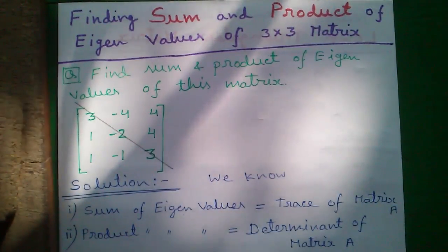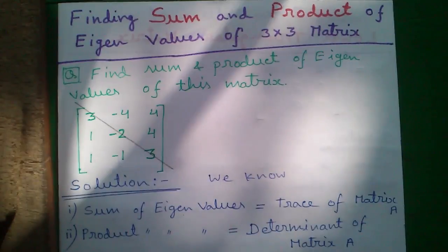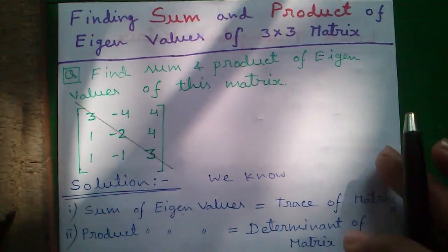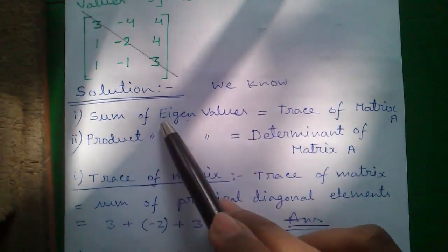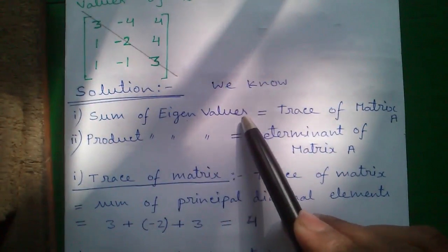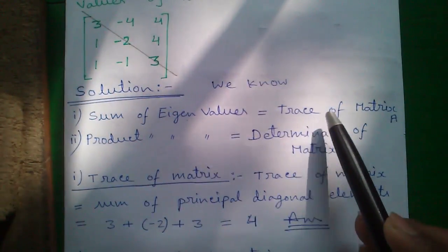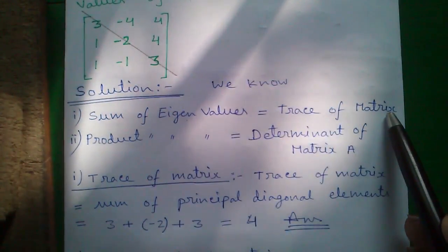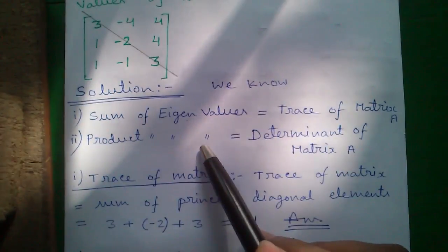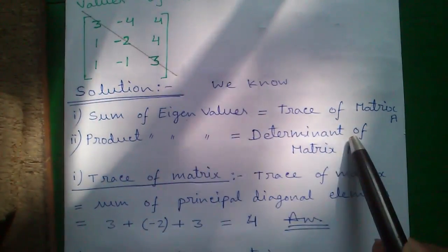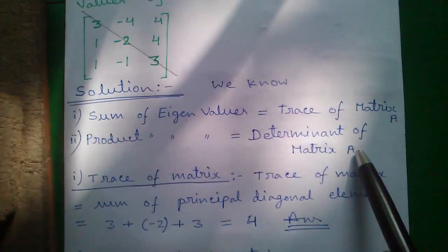Find the sum and product of the eigenvalues of the following matrix. We know the sum of eigenvalues is the trace of the matrix A, and the product of the eigenvalues is the determinant of the matrix A.